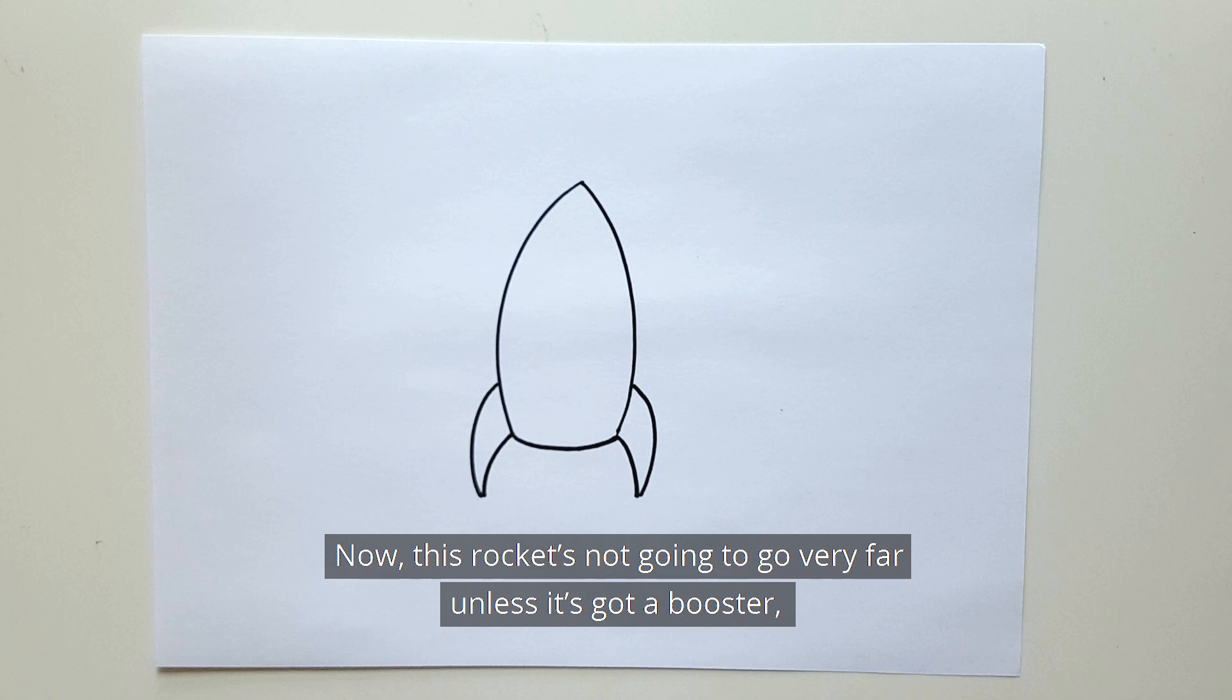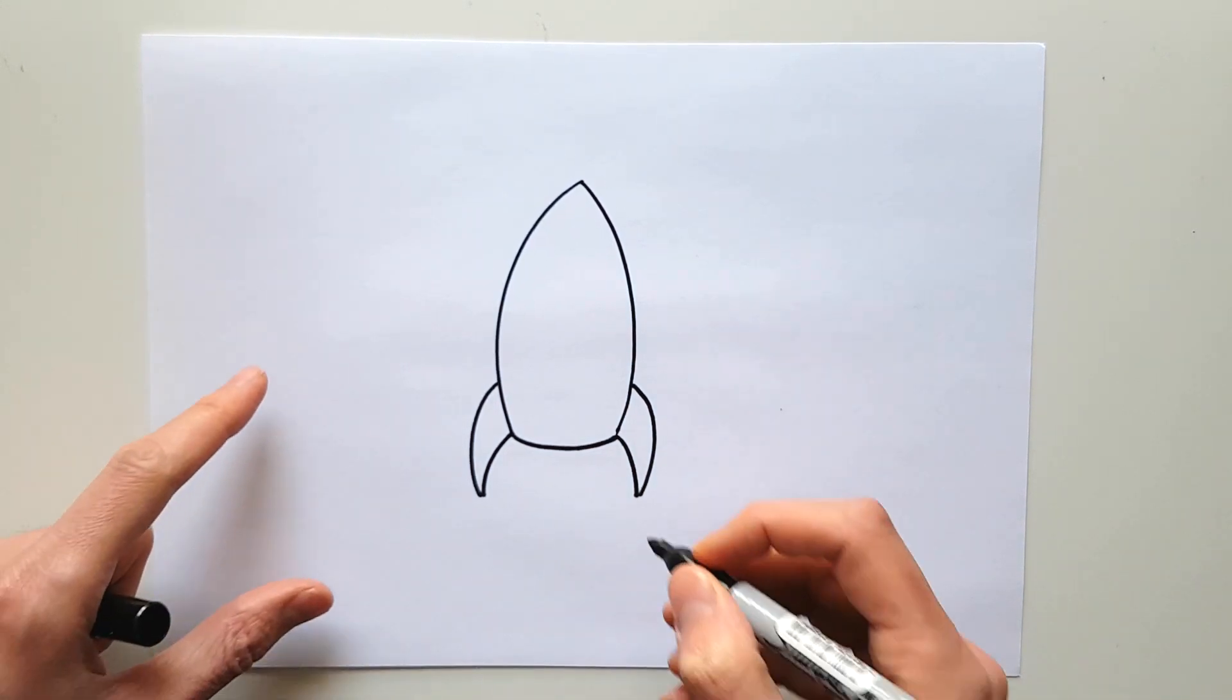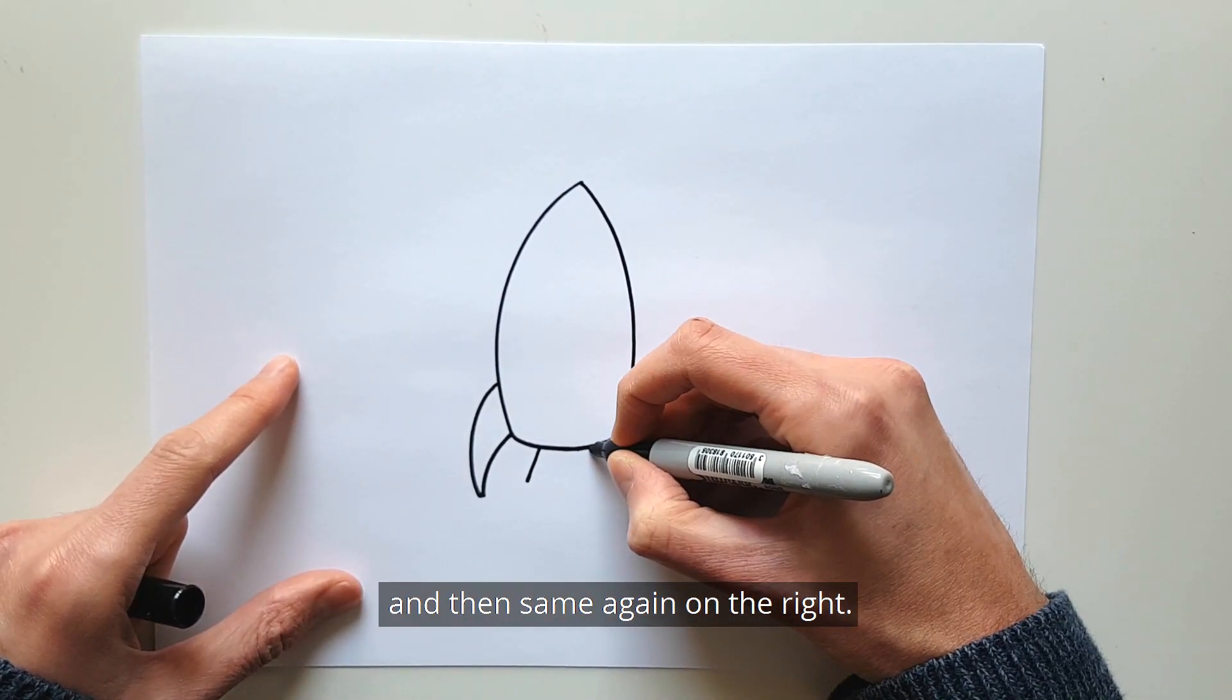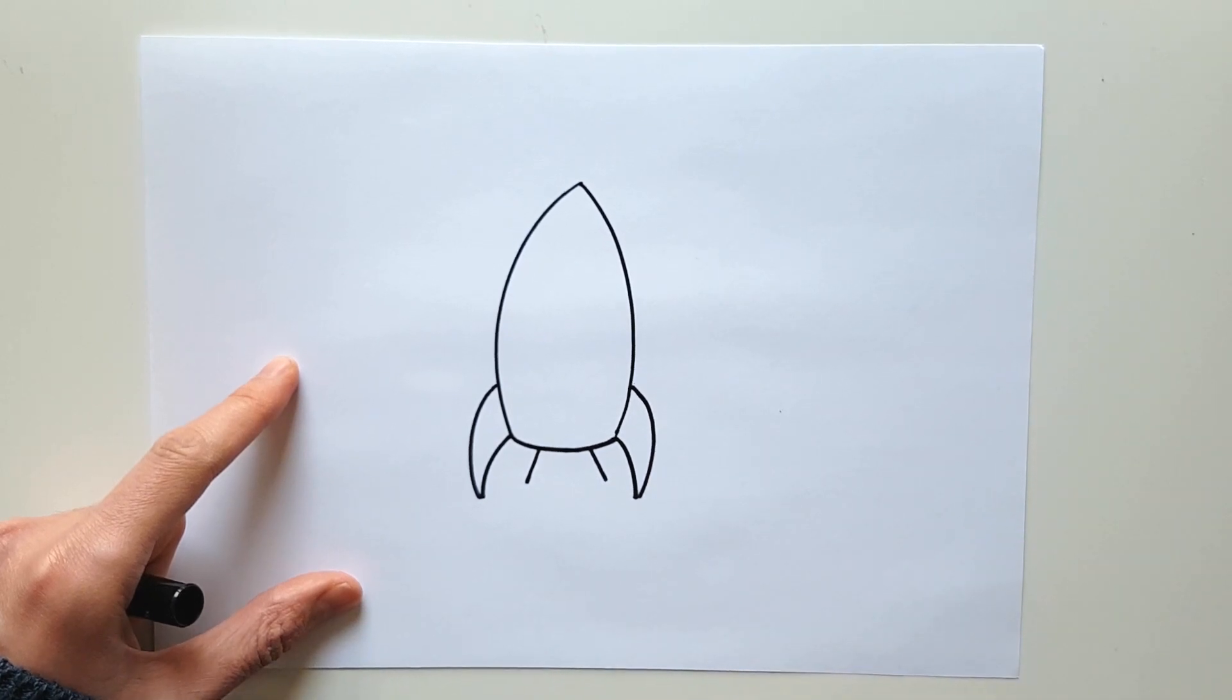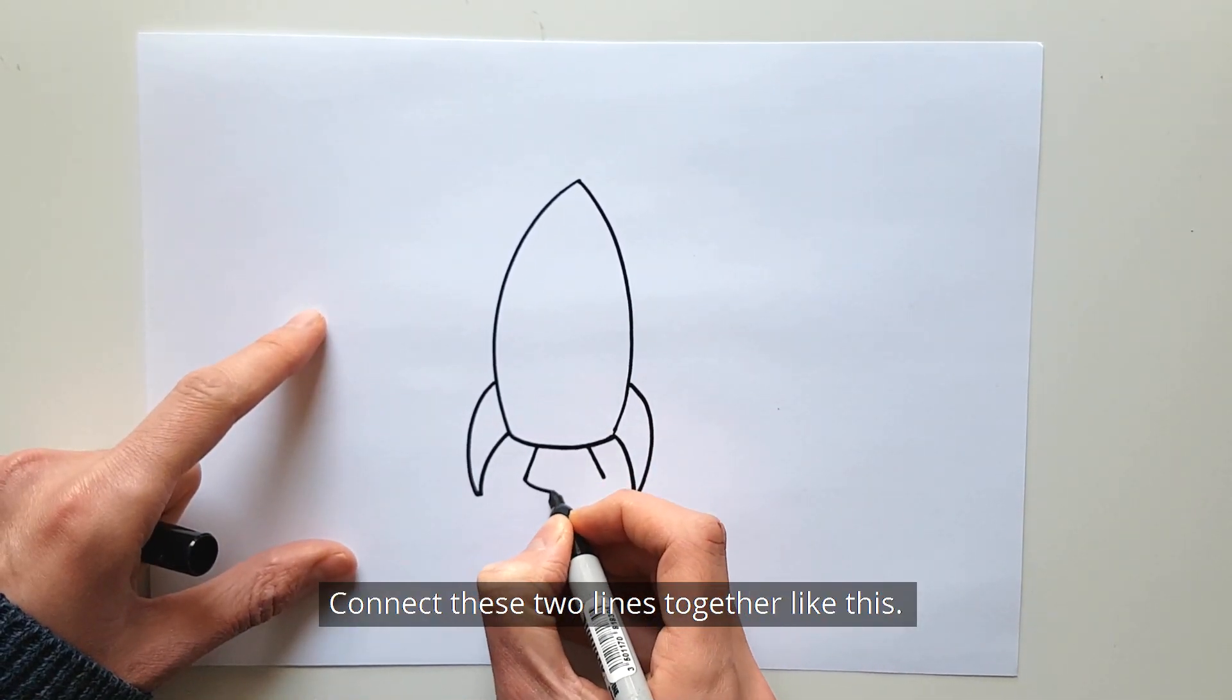Now this rocket's not going to go very far unless it's got a booster, so let's do that now. We need a straight line down here on the left, and then same again on the right, and then connect these two lines together like this.